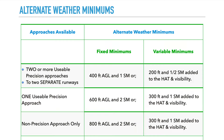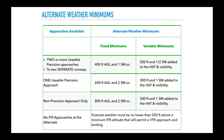If you only have a non-precision approach at that airport, the TAF must show at least 800 feet AGL and two statute miles, or 300 feet and one statute mile added to the HAT and visibility. And finally, if that airport has no IFR approaches available at the alternate, you must ensure that the weather at the destination is no lower than 500 feet above the minimum IFR altitude that will permit you to do a VFR approach and landing.